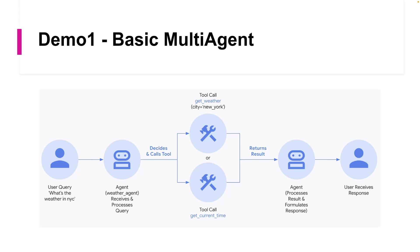Hey guys, this is Sumit K, welcome back to my channel The Cloud Baba. Previously we covered how to create a basic multi-agent using the ADK framework. We created two simple function tools and tried to get the weather report of New York City and also the timing of New York City. The response was hard-coded within the agents, so that was a very basic demo.